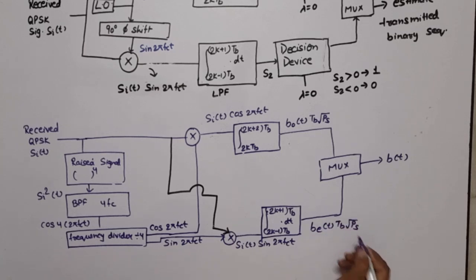So these are the demodulator circuits of QPSK. You can use any circuit for demodulation. Now we will see the bandwidth. In case of QPSK, it is basically an improved version of BPSK, and both in-phase and quadrature channels perform PSK.